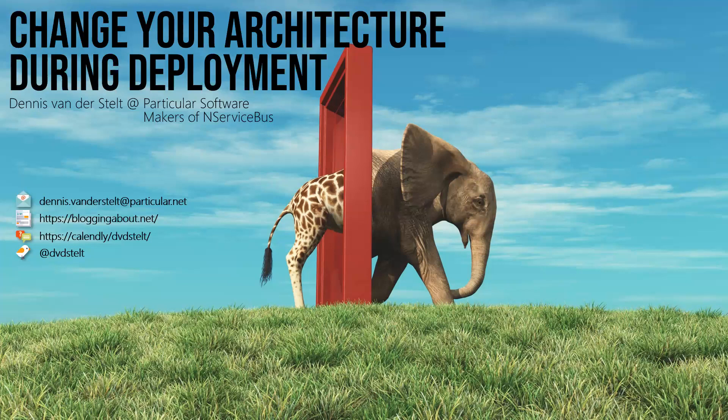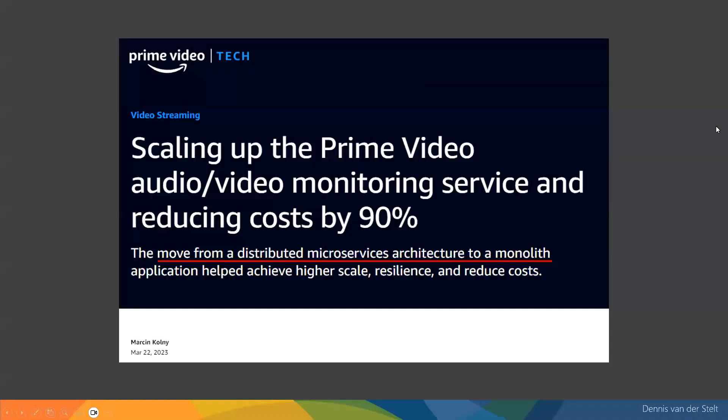Welcome Dennis. I'm going to do this presentation about how to change your architecture during deployment and if that's possible at all, and what it means to do that. Who read the article from Amazon where Prime Video was using microservices and decided to move back to a monolith, where they could scale infinitely and reduce the cost by 90%? You can imagine this article caused quite a stir on the internet, and it's setting the tone of this presentation, especially the responses to it.